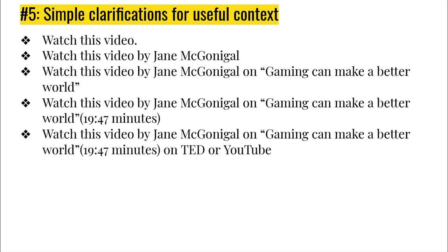TED Talks are a great example where you could say, 'Watch this video by Jane McGonigal on gaming can make a better world, 19:47 minutes, on TED or YouTube.' By doing that, you're signaling that if they run into a problem with TED — the site is down or something like that — they can also jump over to YouTube, and there's a good chance all the TED Talks end up there. If you tell them it's on TED and for some reason the link doesn't work, or they can't access the course to find it, they might be able to go search that website themselves. So you're also empowering them to figure things out if they run into hiccups.